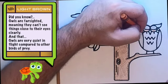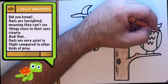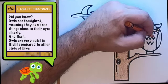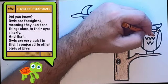Did you know, owls are far-sighted, meaning they can't see things close to their eyes clearly. Also, owls are very quiet in flight compared to other birds of prey.